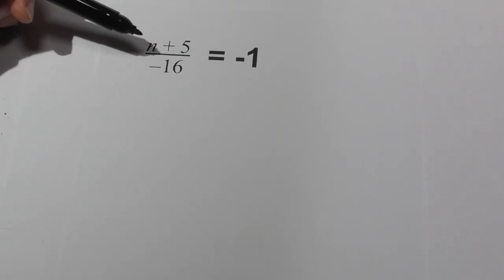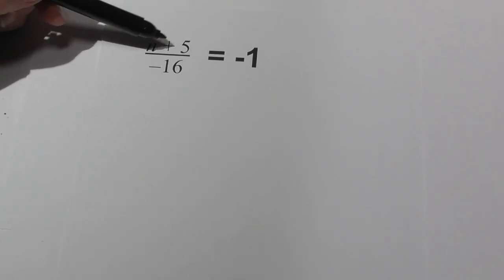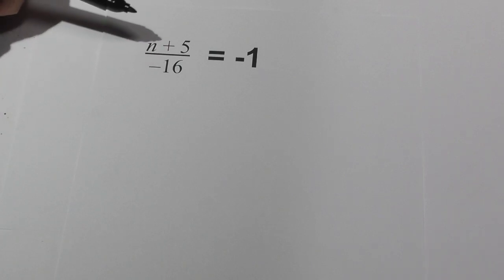Welcome to Moo Moo Math and Science. In this video let's solve n plus 5 over negative 16 equals negative 1, and the first thing we need to do is isolate the variable.